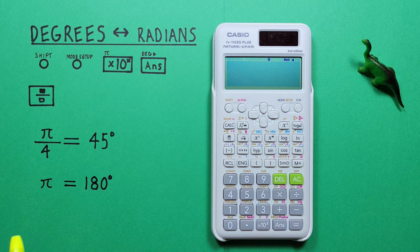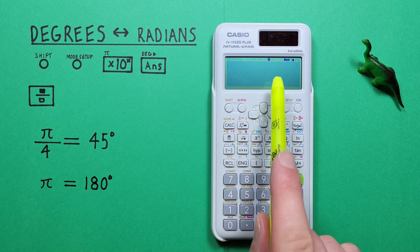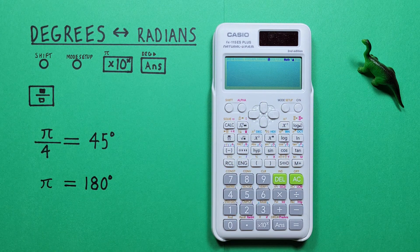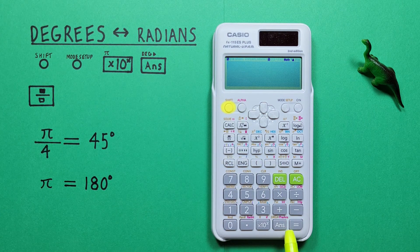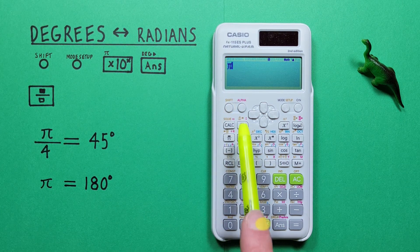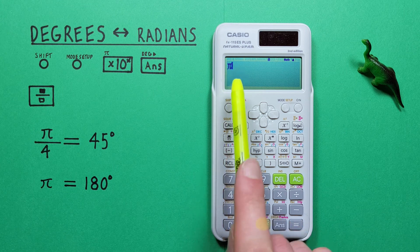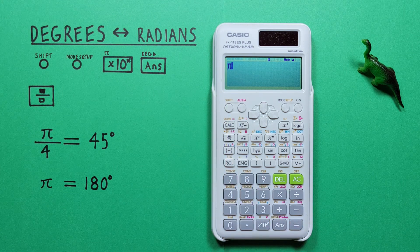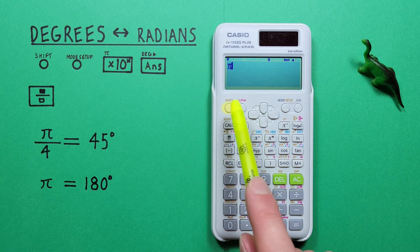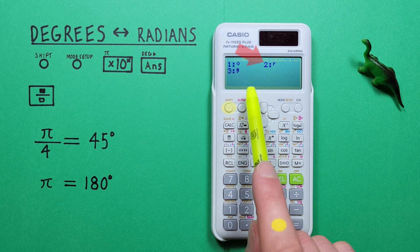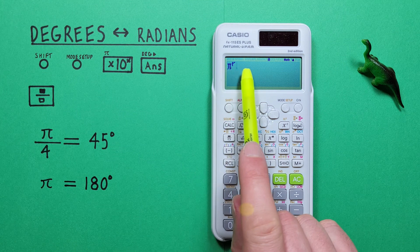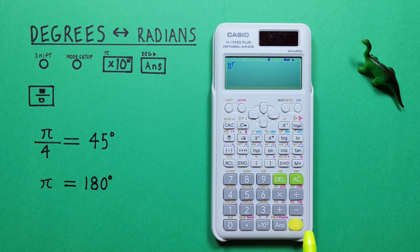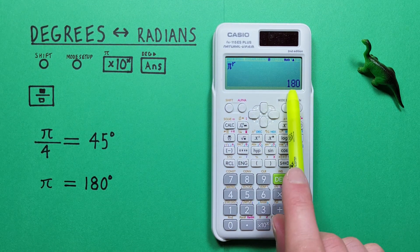Another example: let's say we had pi and wanted that as degrees. We're already in degrees mode, so all we have to do is press shift then times 10 to the x to enter pi, and then tell our calculator these are radians with shift, answer, two. Pi radians equals 180 degrees.